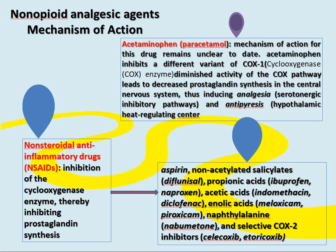Non-steroidal anti-inflammatory drugs work by inhibiting the cyclooxygenase enzyme, thereby inhibiting prostaglandin synthesis — similar to paracetamol. Examples include aspirin, non-acetylated salicylate diflunisal, propionic acids like ibuprofen and naproxen, acetic acids like indomethacin and diclofenac, enolic acids like meloxicam and piroxicam, and selective COX-2 inhibitors like celecoxib or etoricoxib.